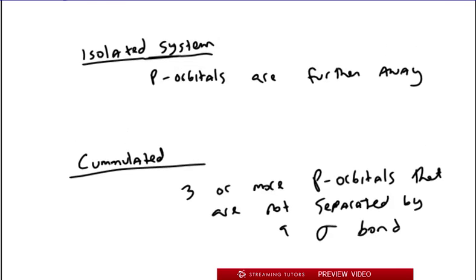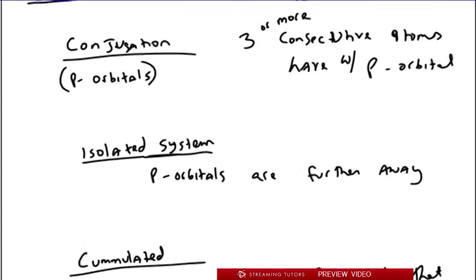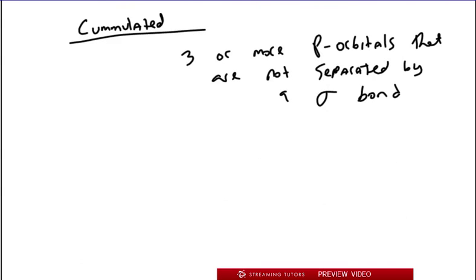So these are the three definitions, and they're all referring to the relationship of orbitals, p orbitals in particular. Now, all this makes sense, but it makes a lot more sense if we can see an actual illustration. So let's do that.